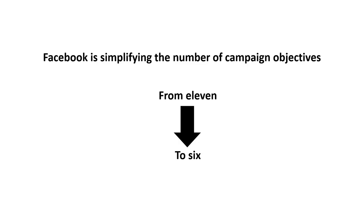Facebook has announced that they will reduce the number of campaign objectives to six. Currently when you create a new campaign on Facebook Ads, there are 11 campaign objectives to choose from, but Facebook is reducing that number.